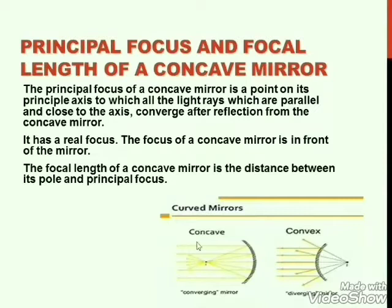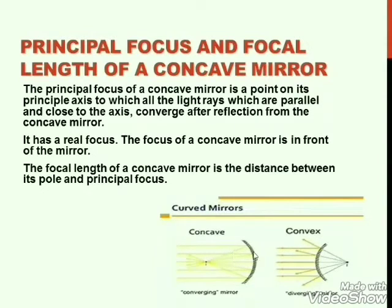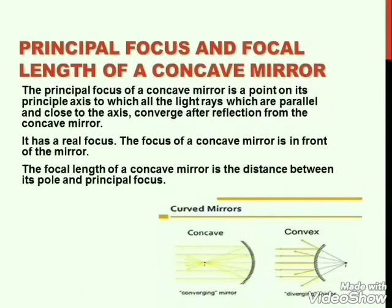Concave mirror has a real focus. The reflecting part is this side where all the yellow lines are, and the shaded region does not possess reflection of light. The focus of the concave mirror is not behind the mirror — it is in front of the reflecting surface. That is why we call it a real focus.